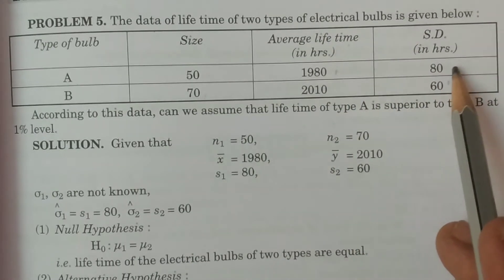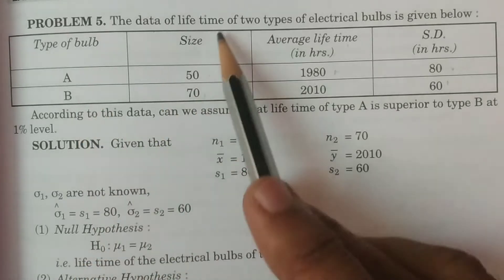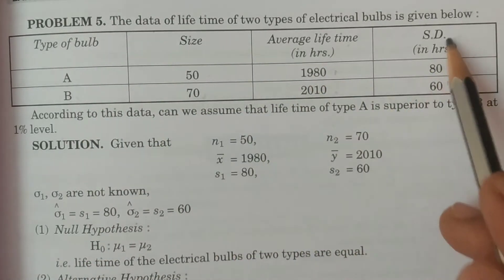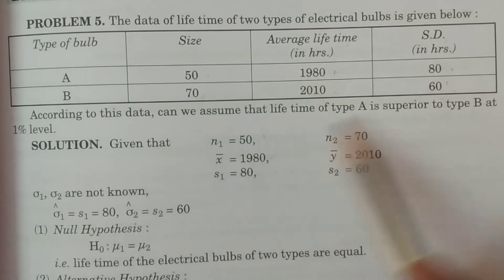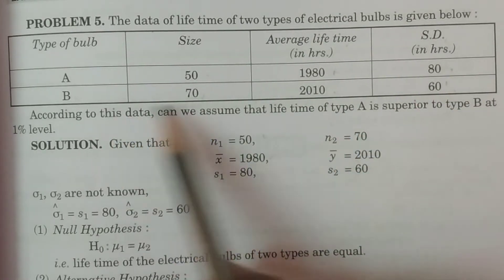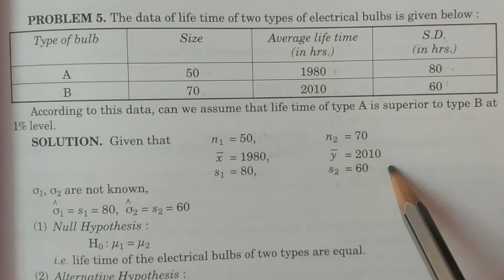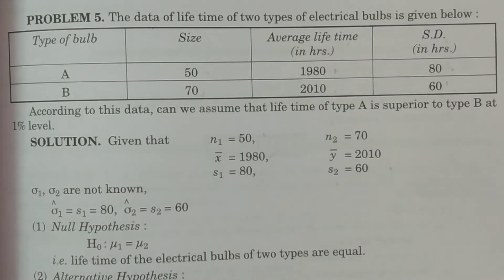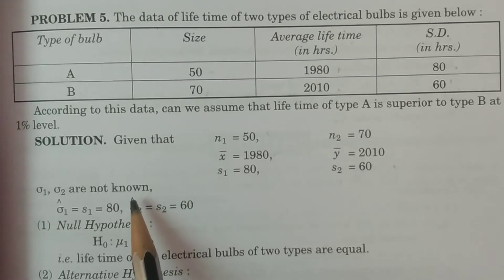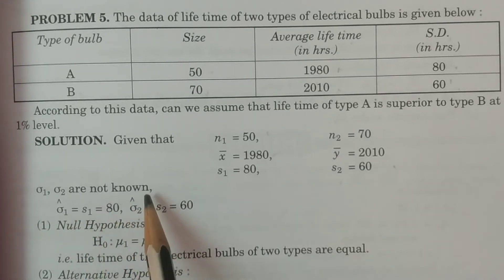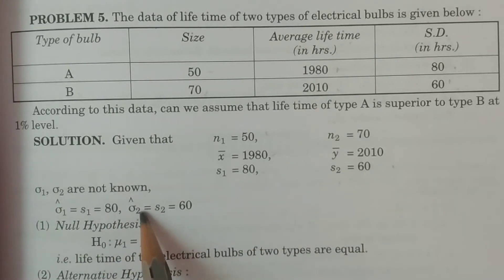N1, X̄, and S1 are the sample standard deviation for type A. For type B: N2, Ȳ, and S2. The given values are N1=50, X̄=1980 hours, S1=80. Similarly, N2=70, Ȳ=2010, and S2=60. Regarding the population standard deviations σ1 and σ2, which are not given, we estimate: σ1' = S1 = 80 and σ2' = S2 = 60.